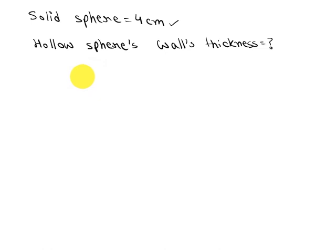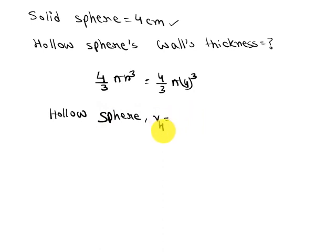For the solid sphere, the sphere's volume is 4/3 π r³, that is 4/3 π times 4³. For the hollow sphere, the volume will be, let's say, Vh.